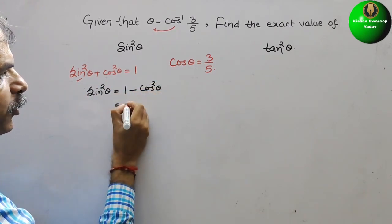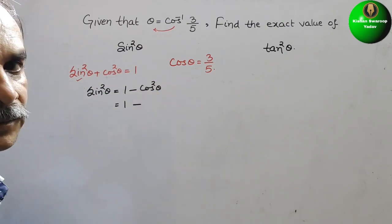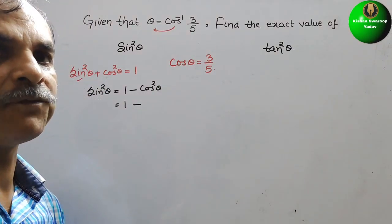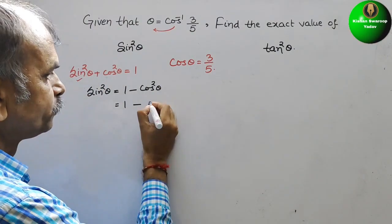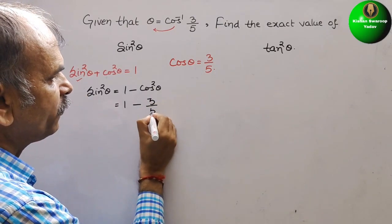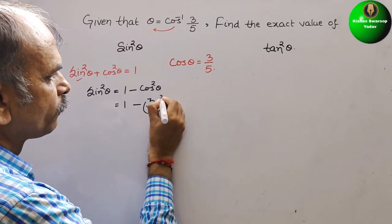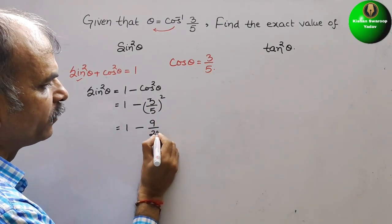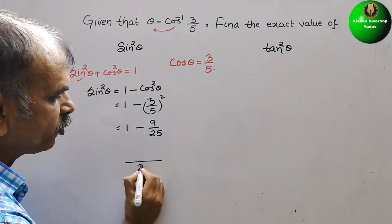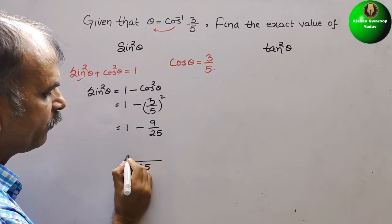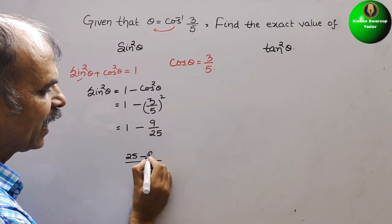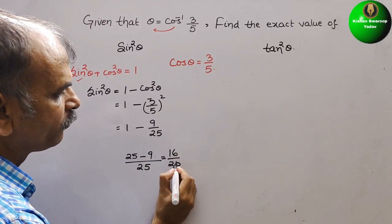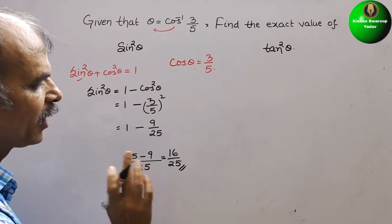So now put the value: 1 minus cos square theta. Cos theta is 3 by 5, so the square of that is 3 by 5 whole square. That is equal to 1 minus 9 by 25. Taking the LCM, which is 25, we get 25 minus 9, that is equal to 16 by 25. So this is your answer for sine square theta.